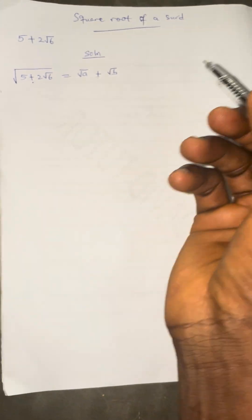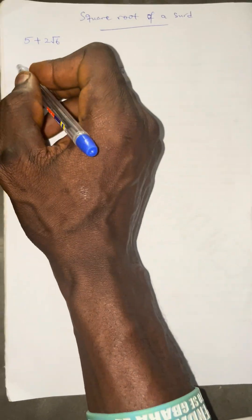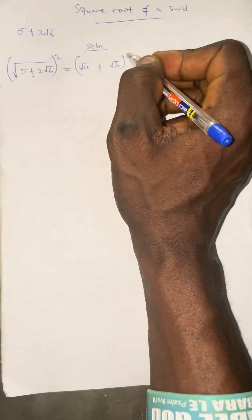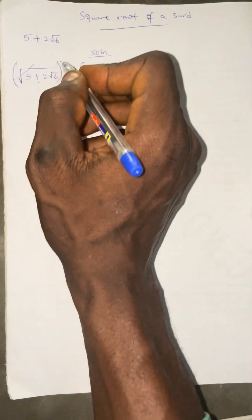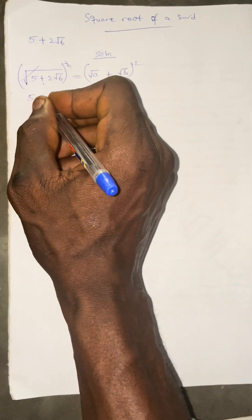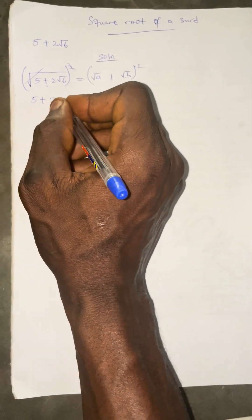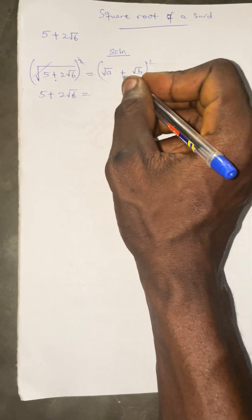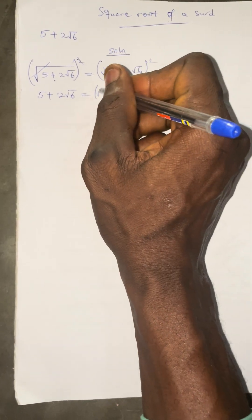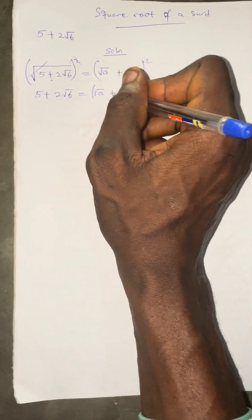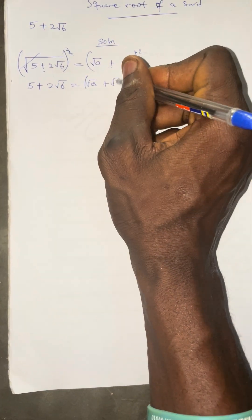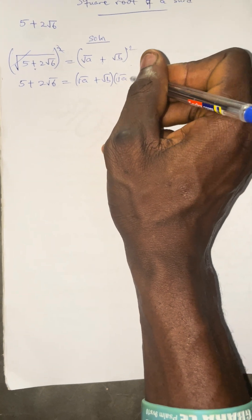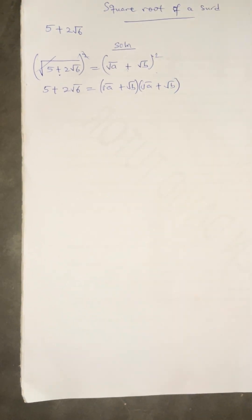The next process is to square both sides. If you square both sides, the square root cancels the square, giving us 5 plus 2 root 6 on the left. On the right, we have root A plus root B, multiplied by another root A plus root B.